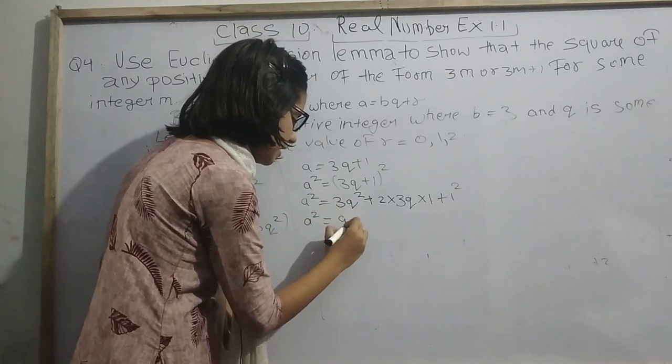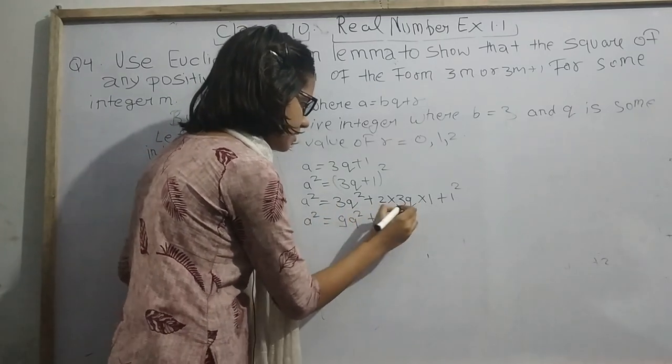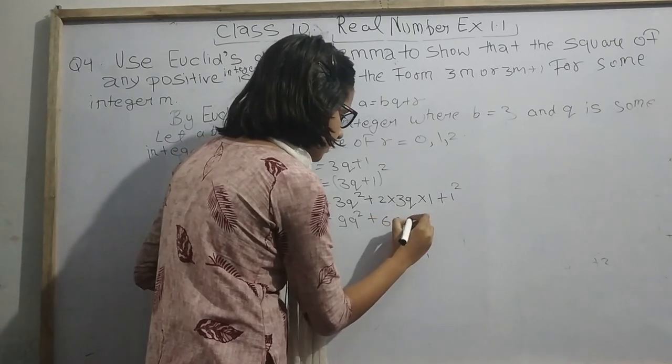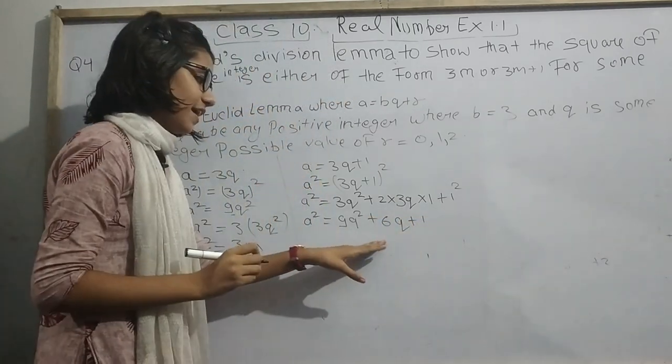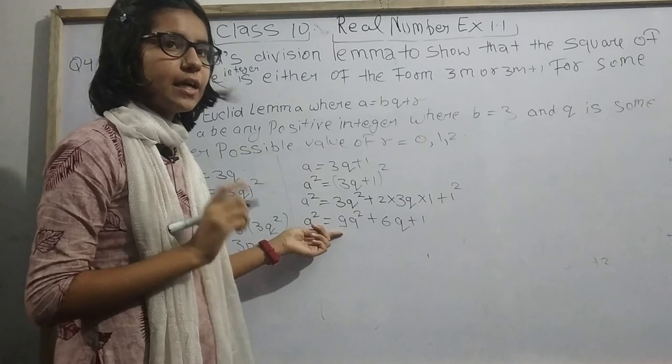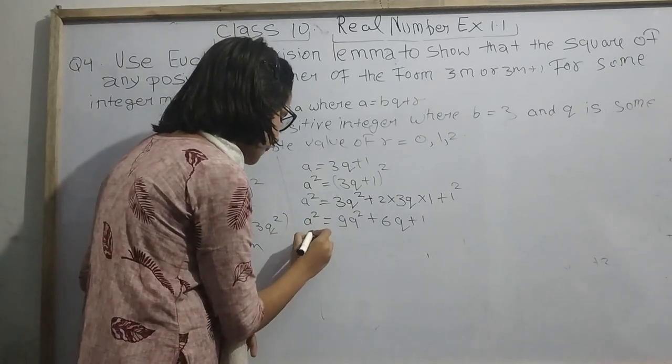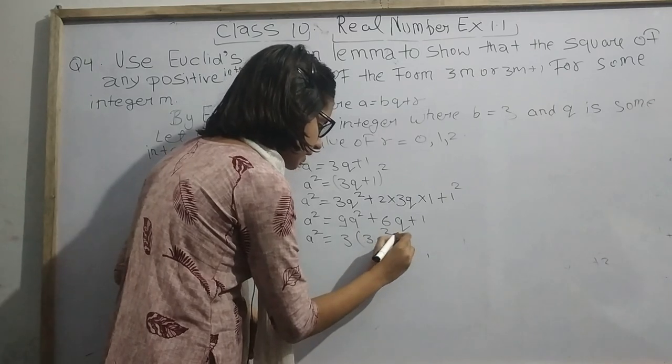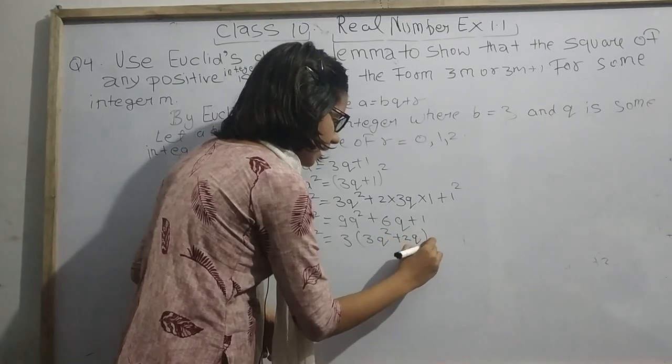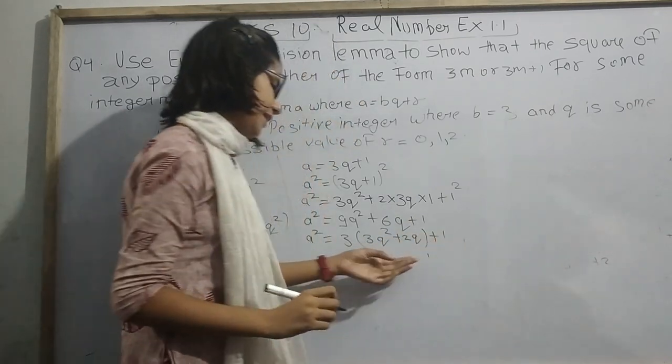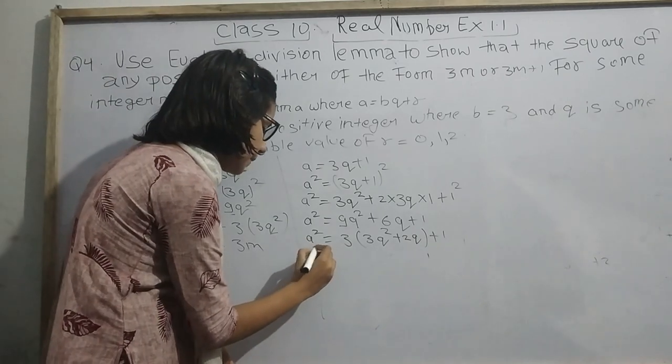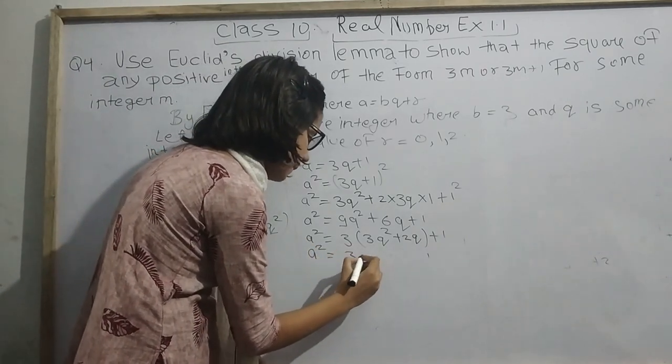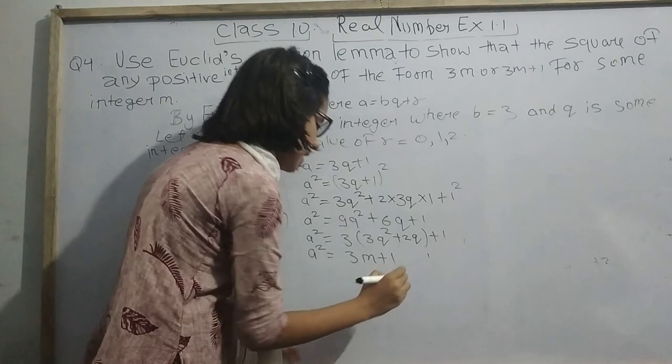That is 9Q square plus 6Q plus 1. We will find a number that divides both 6 and 9 completely. That number is 3. So 3 times 3Q square plus 2Q, and this 1 in the end. We will change this as M. So we can write 3M plus 1.